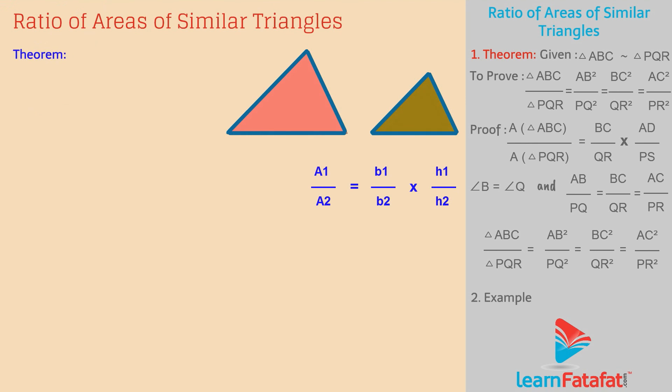Theorem: The ratio of areas of two similar triangles is equal to the square of the ratio of their corresponding sides.